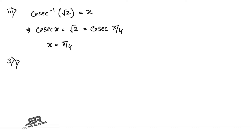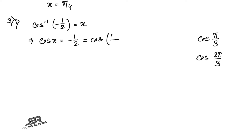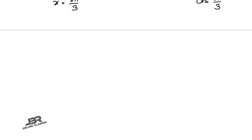Sum number 3.1: cos⁻¹(−1/2) = x. We know cos(π/3) = 1/2. Since we have minus half, we use cos(2π/3) = −1/2. Therefore x = 2π/3.